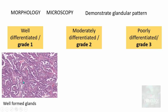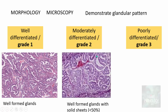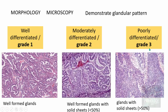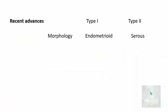Well-differentiated grade 1 tumors display well-formed atypical glands. Moderately differentiated grade 2 tumors show well-formed glands along with solid sheets, with solid sheets accounting for less than 50% of the tumor. Poorly differentiated grade 3 tumors have predominantly solid sheets — more than 50% of the tumor composed of solid sheets of malignant cells. That is the histology of the endometrioid type of endometrial cancer.